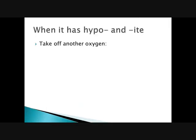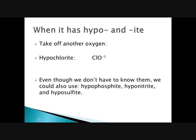Hypochlorite has 'hypo' in front, which means you take off another oxygen from the chlorite version. So hypochlorite is ClO with a negative one charge — only one oxygen, no subscript on the O. That's the only 'hypo' on our list. You could also have hypophosphite, hyponitrate, or hyposulfite, but you don't need to know those.